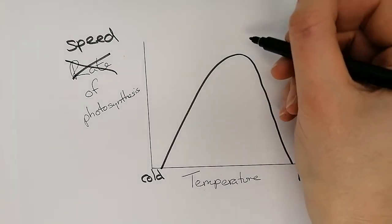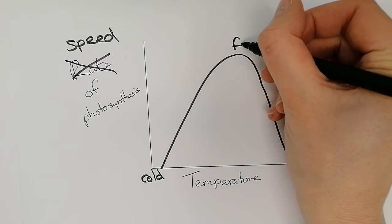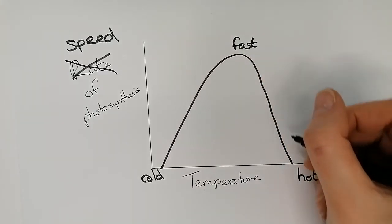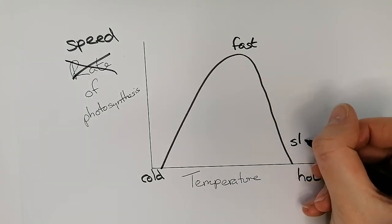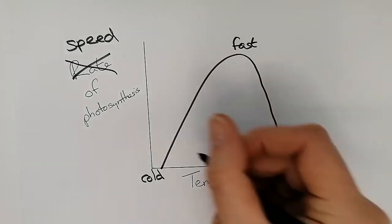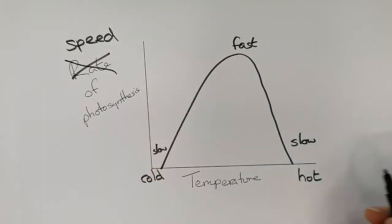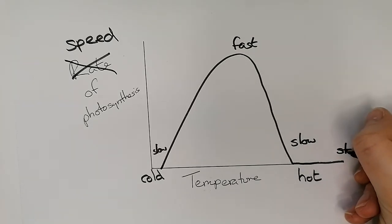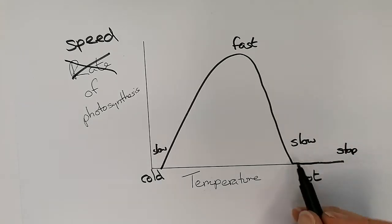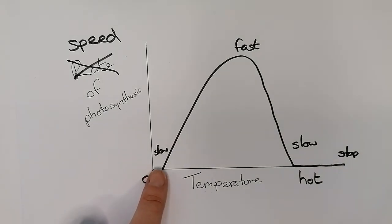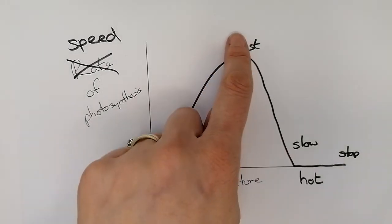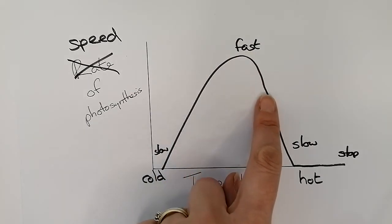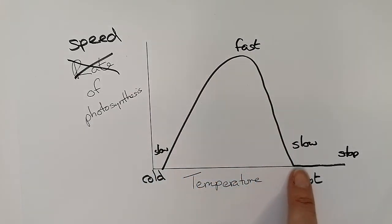The top of the y-axis represents a very fast rate, with slow rates toward the bottom. When the graph is flat along the x-axis, photosynthesis has stopped completely. Starting from the left: it hasn't started yet, then goes slowly, getting quicker and quicker until it's really fast, then slowing back down and eventually stopping.